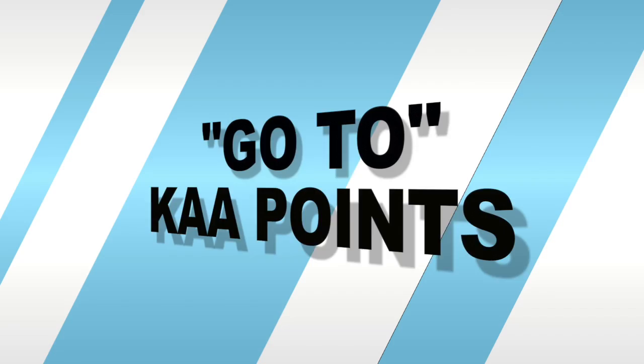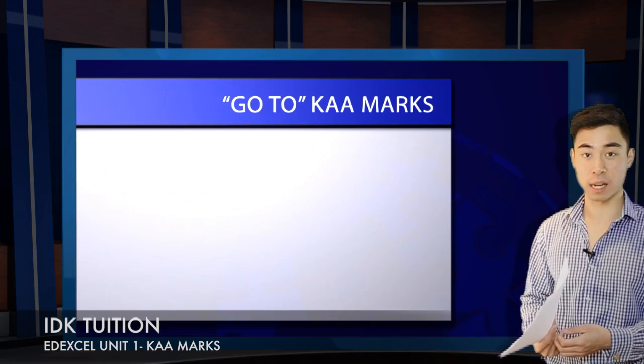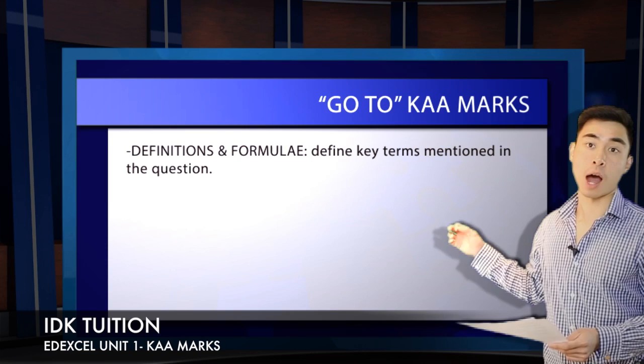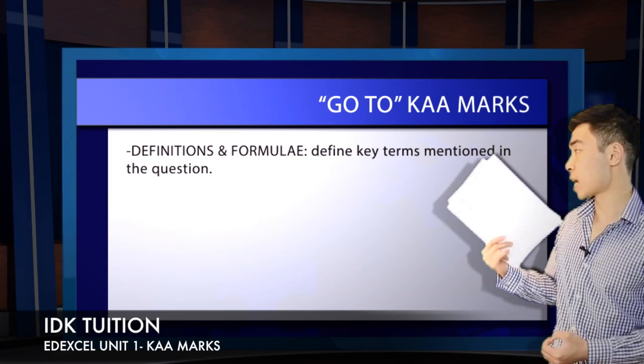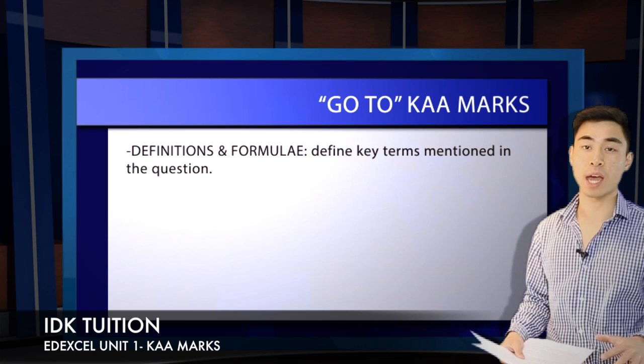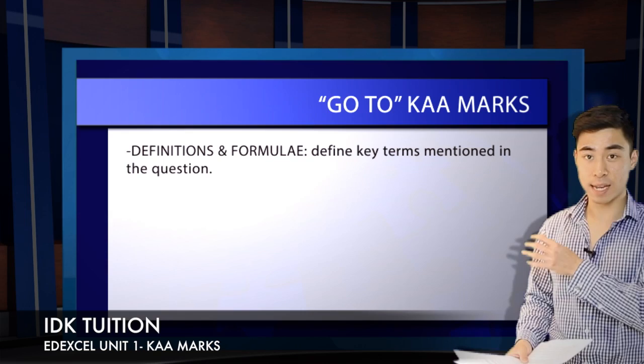There are different strands of KAA marks on offer in your Edexcel AS level exam. The first you should go to are definitions and formulae. If in the question you identify a key term you can define or attach a formula to, you give that definition and that formula — simply state it. You don't need to work too hard incorporating it into your answer; simply stating the definition and the formula, there are marks on offer for that.